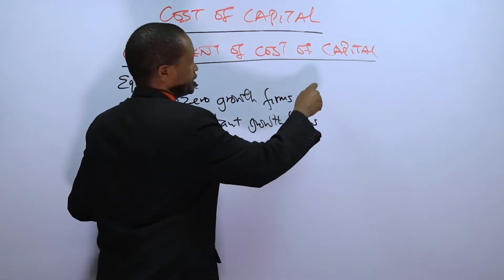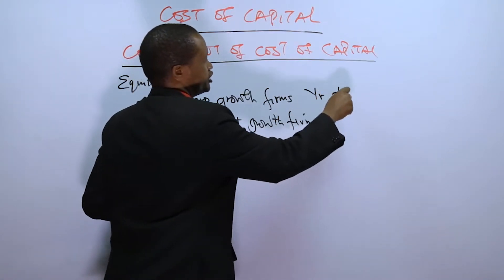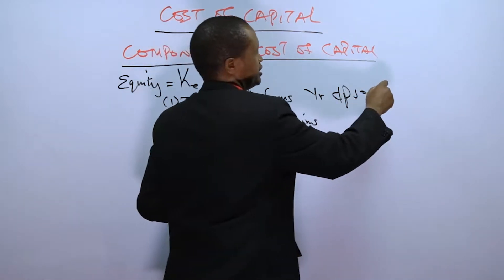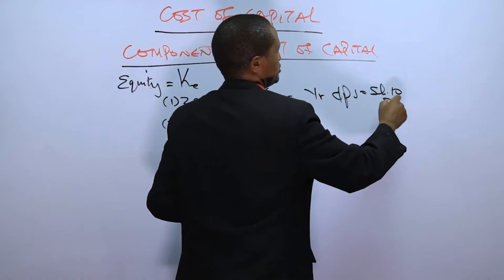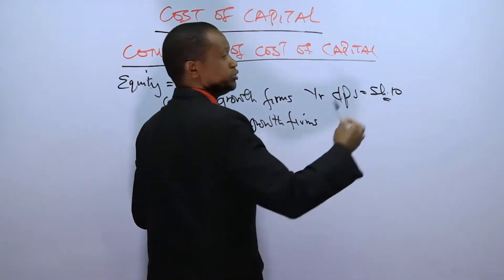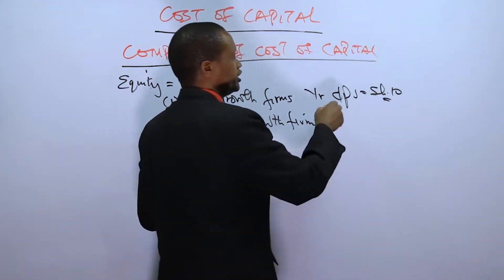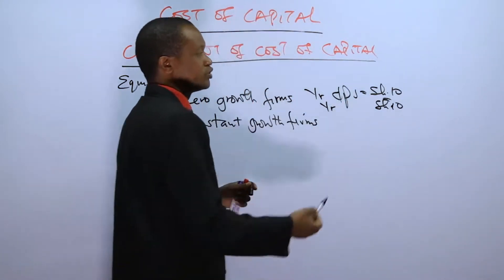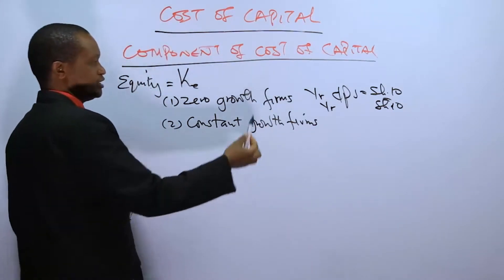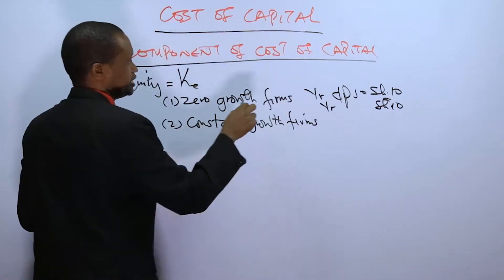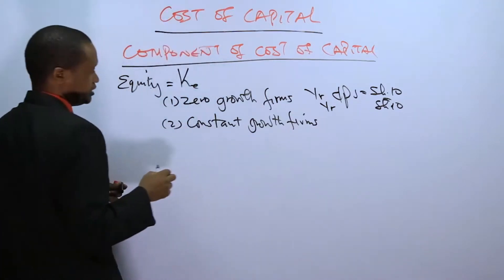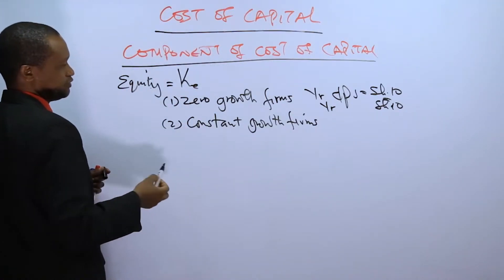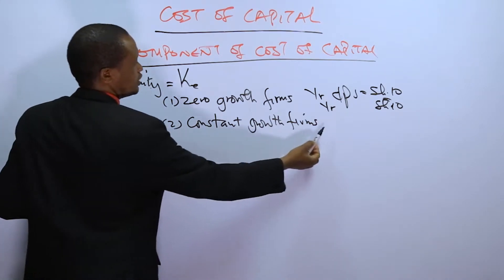For example, if in year one the dividend per share is 10 shillings per share, then it will remain the same for year two at 10 shillings per share. There is no growth — it is constantly at zero growth.